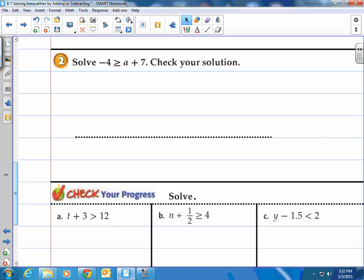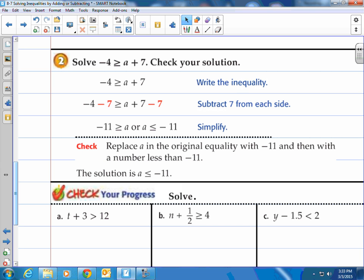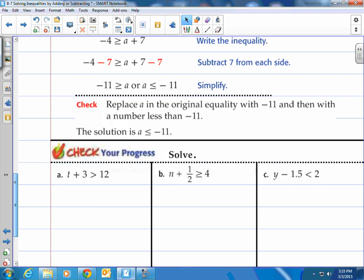How about here, this example. Solve negative 4 is greater than or equal to a plus 7. Well step 1, rewrite the inequality. Then look how am I gonna get a by itself. I'm gonna have to subtract 7 from both sides. When you subtract 7 from both sides you end up with negative 11 is greater than or equal to a. Or if you flip that around, notice the inequality gets flipped around too. A is less than or equal to negative 11. So what we would do is to do a check, simply replace a in the original equality with negative 11, and then with a number less than negative 11. And you can see that the solution is a is less than or equal to negative 11.